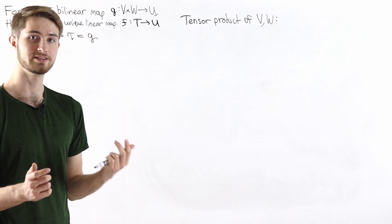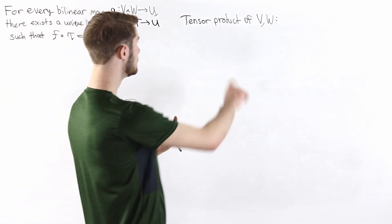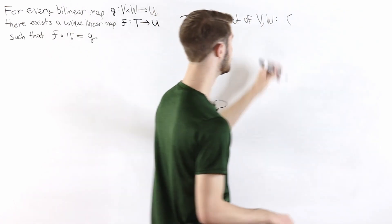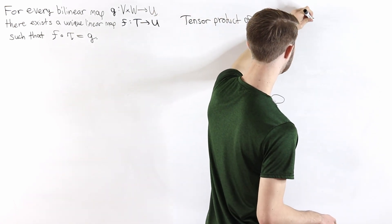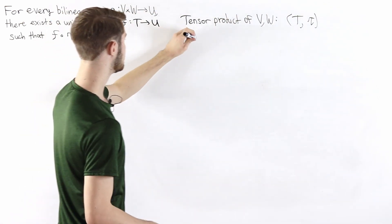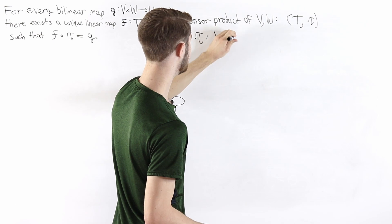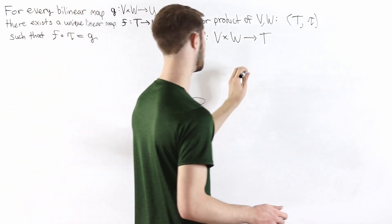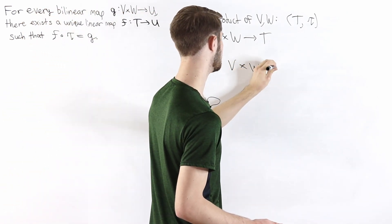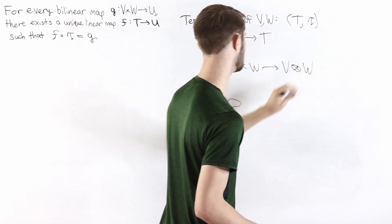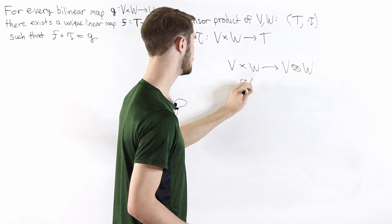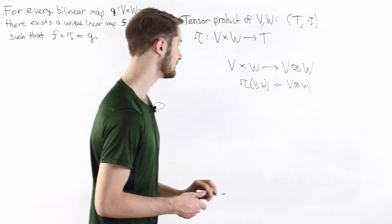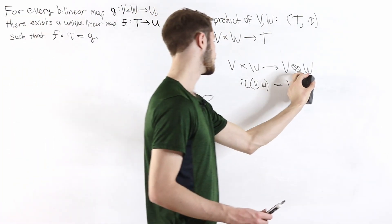Let's talk about what the tensor product of two vector spaces is. When we talk about the tensor product of vector spaces V and W, we're really talking about two things. The first is a vector space T, and the second is a function tau — a bilinear map from V cross W into the tensor product T. If we're looking at a map from V cross W into V tensor W, the map tau is given by tau of (v, w) equals v tensor w, sending every ordered pair into the associated pure tensor.